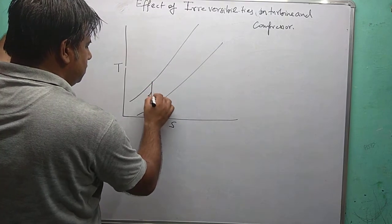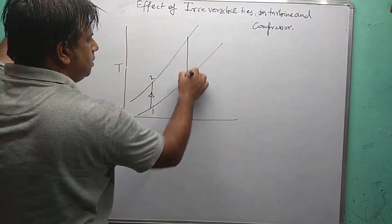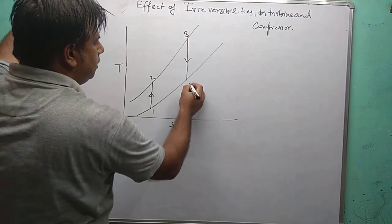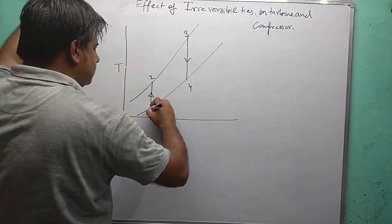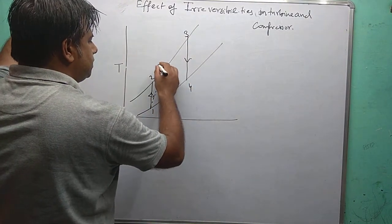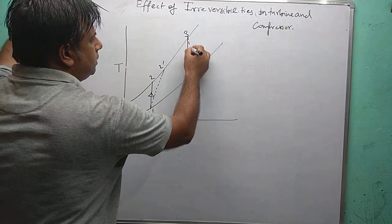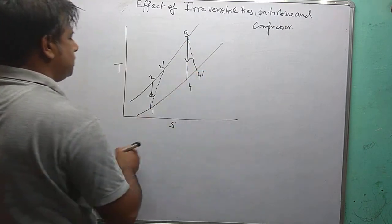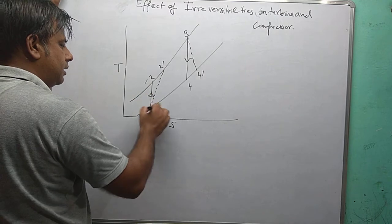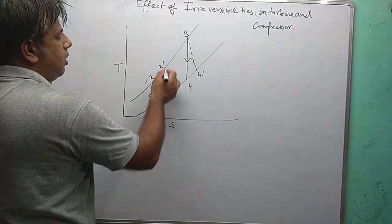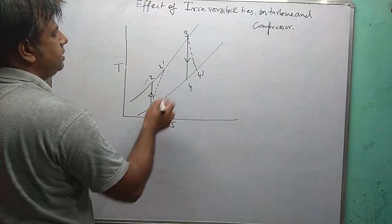Okay, points 1, 2, 3 and 4. Due to irreversibility, it is like the 2 dash, and due to irreversibility in turbine, it is 4 dash. So this is my ideal enthalpy drop H2 minus H1, or actual enthalpy drop H2 dash minus H1.